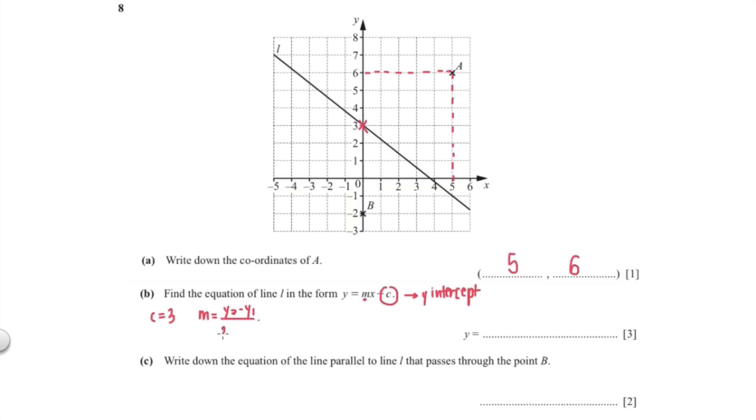To calculate your gradient, you would do y2 minus y1 over x2 minus x1. Now pick 2 points. I pick negative 5 and 7 and 0 and 3. So I'm going to put that into the formula. And my gradient is negative 4 over 5. So the equation of the line is negative 4 over 5x plus 3.